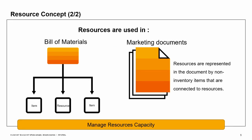Much like items, resources can be used in bills of materials and marketing documents. When a bill of materials is produced, a machine resource is often needed in the production process, and an employee resource may be needed as well — for example, to operate the machine. Resources can be ordered, purchased, sold, or have other actions performed in marketing documents. To do this, we first need to connect a non-inventory item to the resource. This item, which represents a resource, is then used in a marketing document.